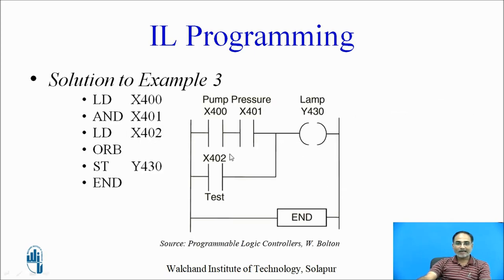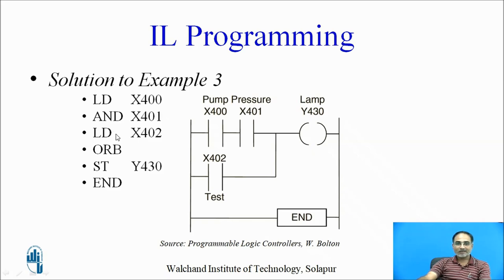The ladder diagram shows the pump and pressure sensors in series, with a test switch in parallel, driving a lamp output. In the Instruction List: LD reads the pump sensor status, AND combines it with the pressure sensor, LD reads the test switch, OR B combines the two blocks, and finally ST Y430 writes the result to the lamp output.